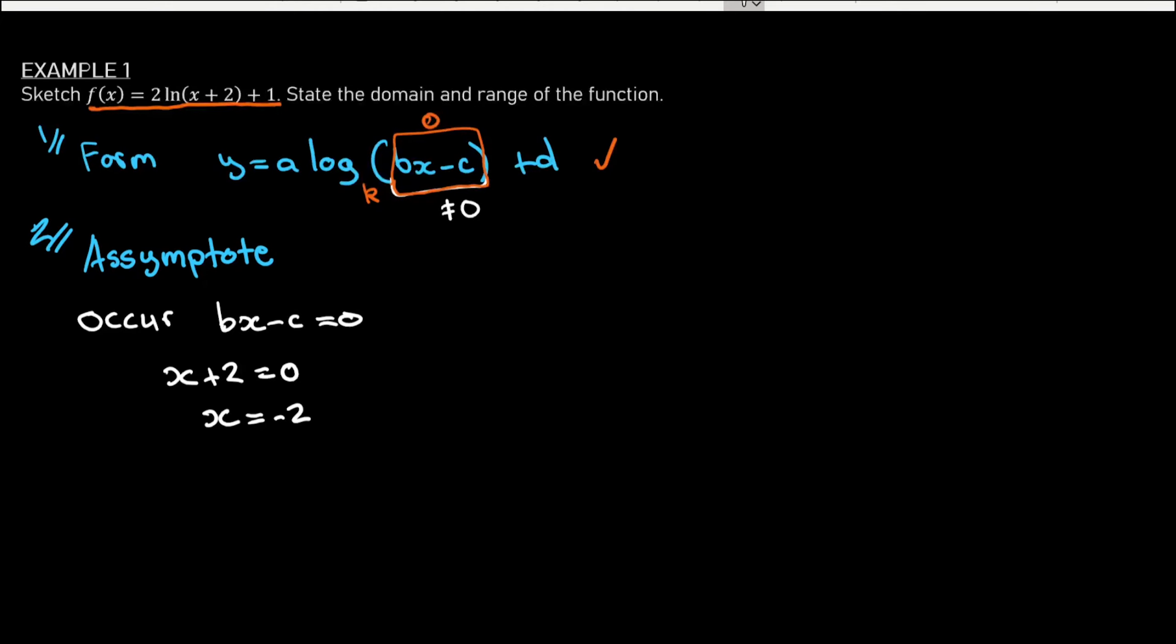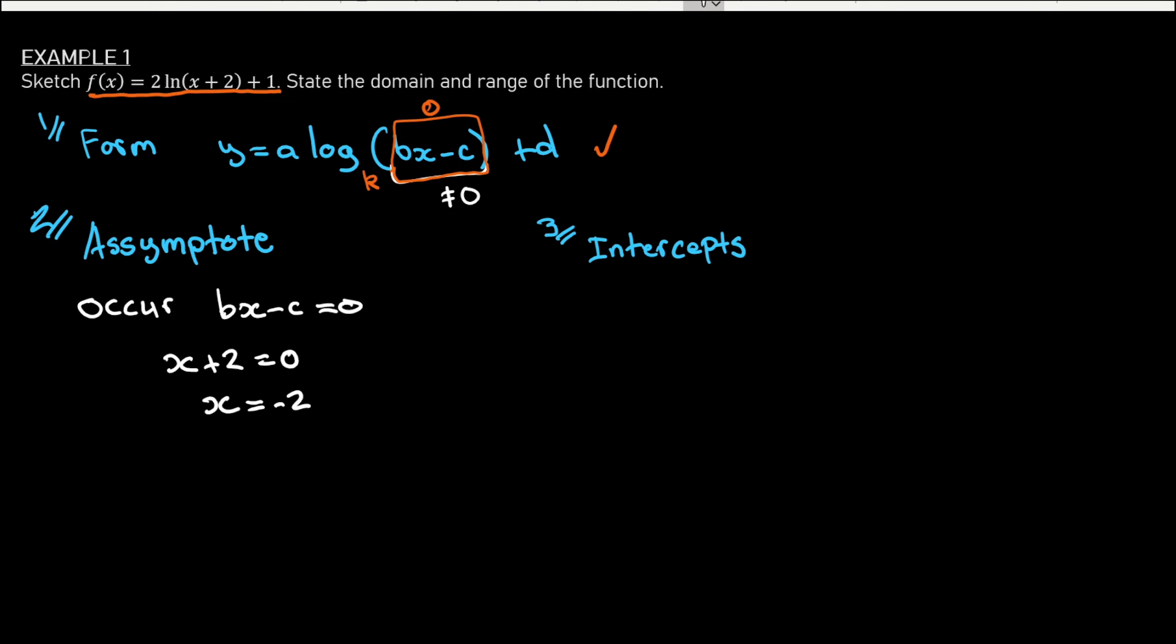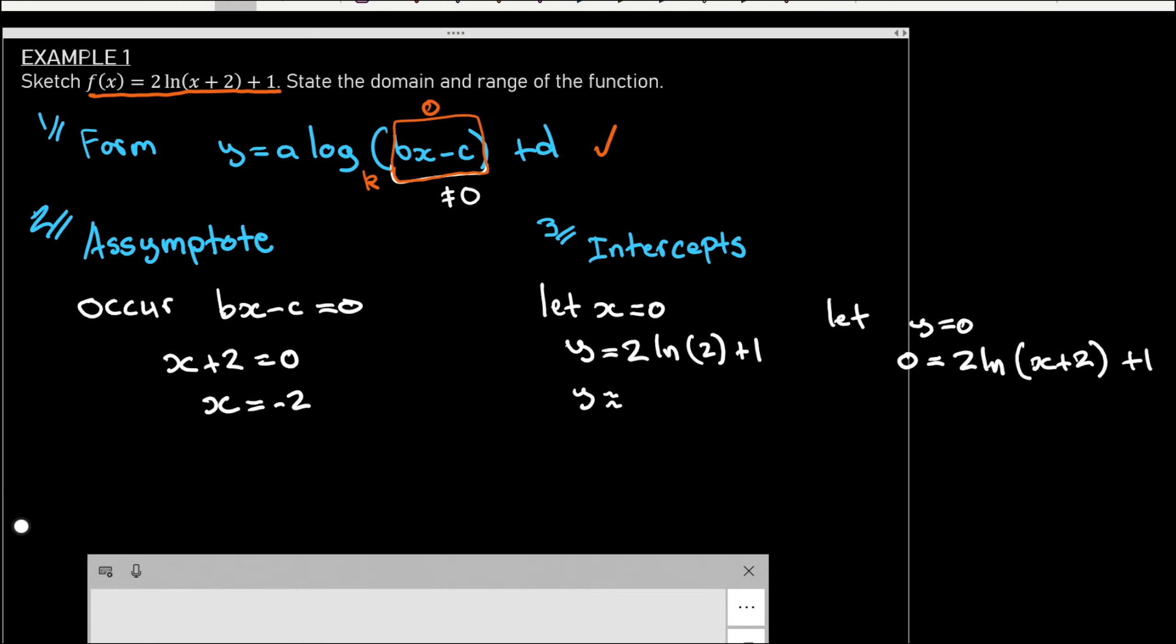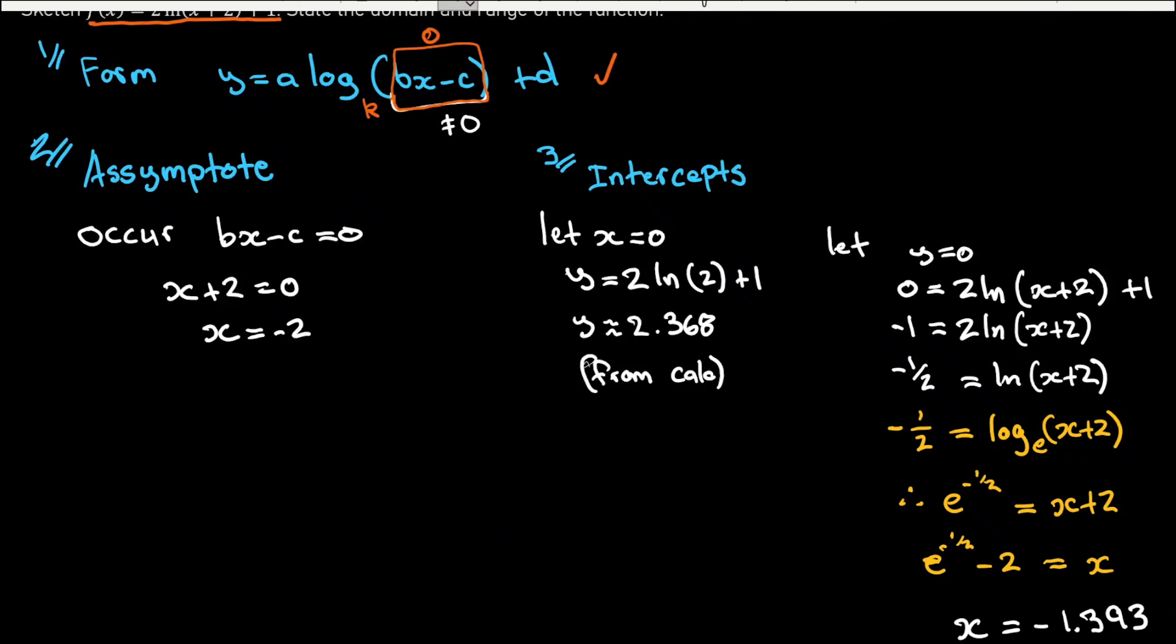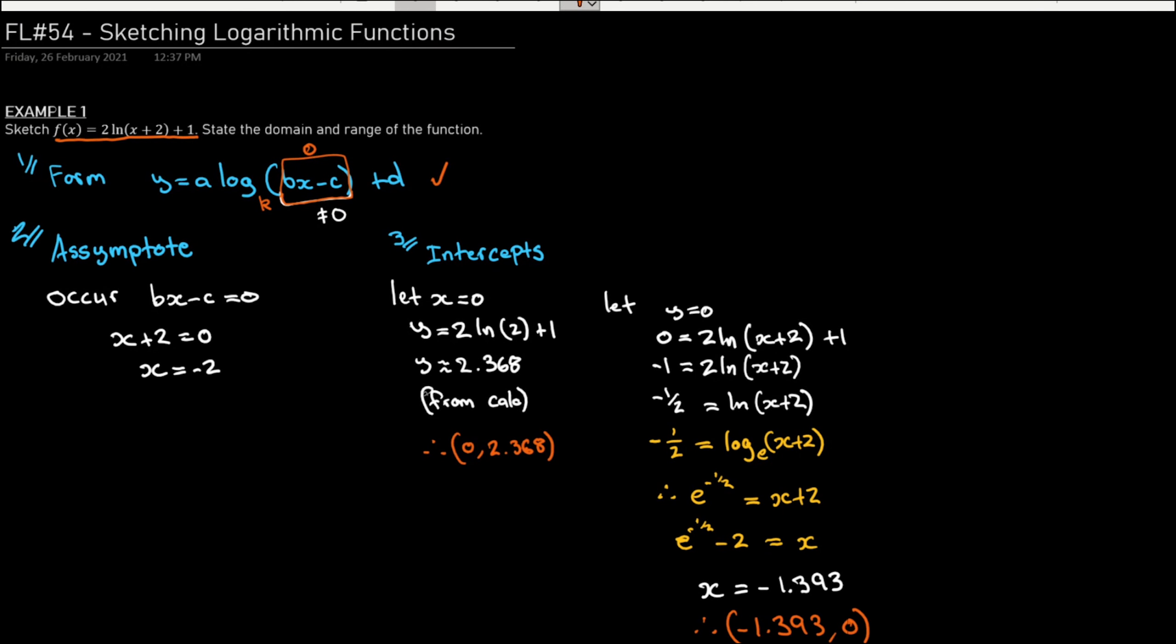The next thing I want to look for is my intercepts. Just like anything else, I'm going to find my y-intercept by letting x equals zero, and I'm going to find my x-intercept by letting y equals zero. Once we've done that working out, we can see we've got two intercept points. I've got an x-intercept and a y-intercept. I've used a calculator to simplify those.